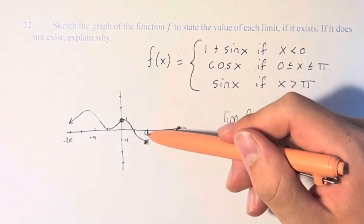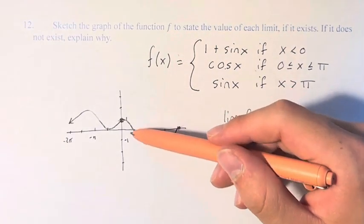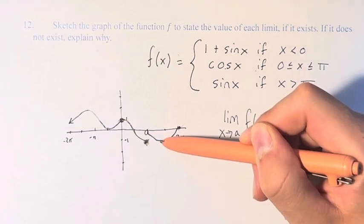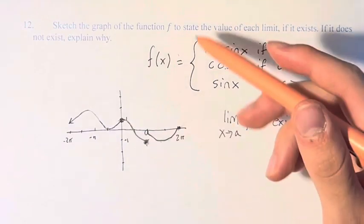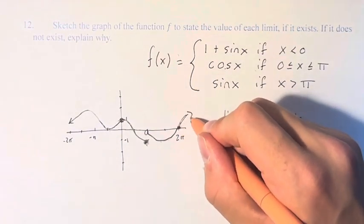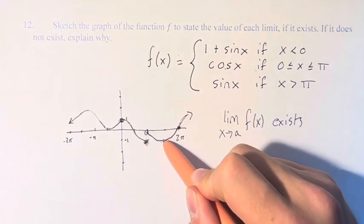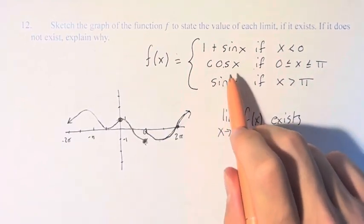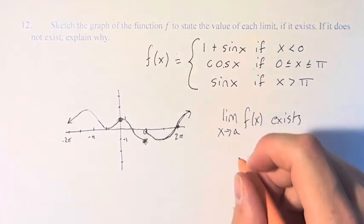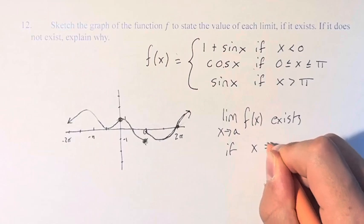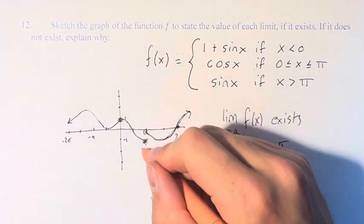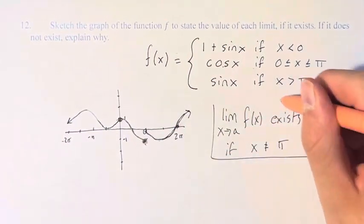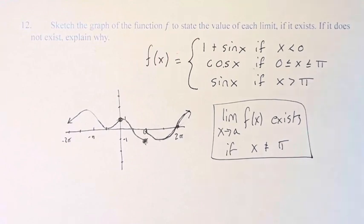And the limit does not exist at x is equal to π. Right here from the left it approaches negative 1, from the right it approaches 0, so it's not continuous. And then after π we continue on and it's continuous all the way throughout because we're just on sine of x. So this limit exists if x is not equal to π. If we're not at this point right here, the limit of the function exists.